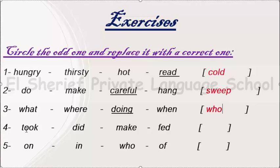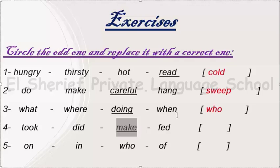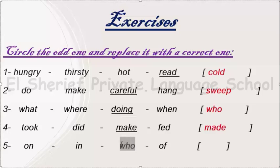Number 4: took, did, make, fed. All of them are verbs, but make is in the present and the other verbs are in the past. So we will replace it with a past verb — we will use made, the past of make. Number 5: on, in, who, of. On, in, and of are prepositions, but who is a question word. So we will replace who with a preposition, like to.